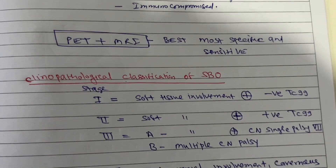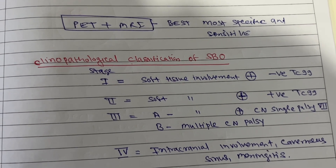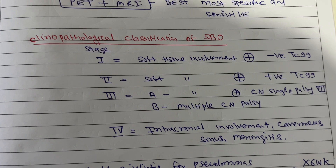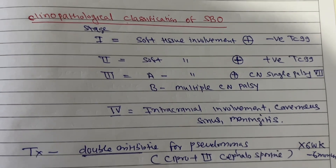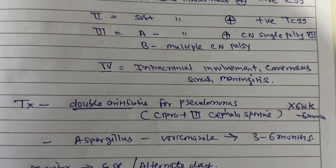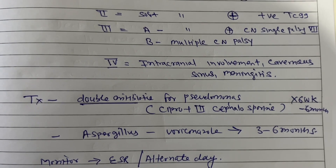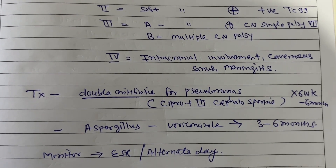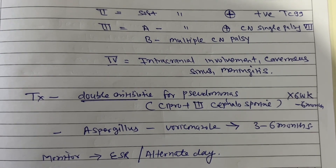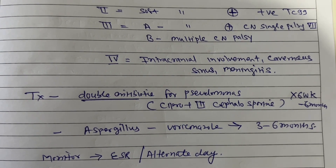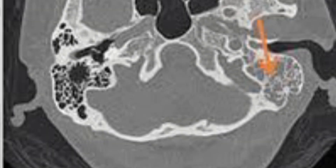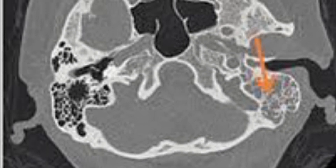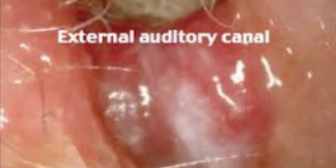Levinson's criteria and PET plus MRI are also useful, being sensitive for clinical-pathological classification. The staging of skull base osteomyelitis is: Stage 1 - soft tissue involvement; Stage 2 - soft tissue plus Technetium positive; Stage 3a - cranial nerve involvement with single palsy; Stage 3b - multiple cranial palsies; Stage 4 - intracranial extension. Treatment involves double antibiotics targeting Pseudomonas plus antifungal therapy for three to six months.